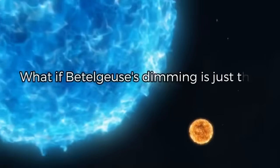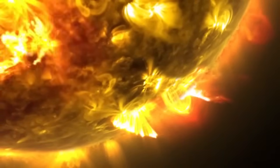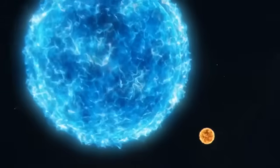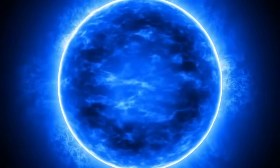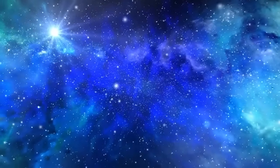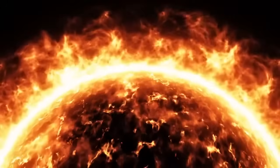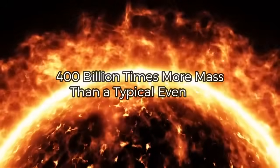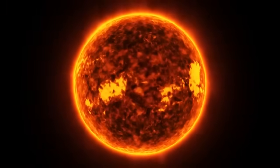What if Betelgeuse's dimming is just the beginning of a much larger mystery? The massive surface mass ejection, SME, that Betelgeuse experienced can be likened to a star-sized volcanic eruption of epic proportions. Imagine a celestial giant, a star so colossal that it dwarfs our sun, suddenly expelling a tremendous amount of material from its surface. This cosmic eruption sends shock waves rippling through the surrounding space, creating a massive plume of gas, molecules, and dust that partially obscures our view of the star. The scale of Betelgeuse's SME is truly mind-boggling. Astronomers estimate that the star ejected a staggering 400 billion times more mass than a typical event on other stars. To put that into perspective, the amount of material thrown off by Betelgeuse is equivalent to multiple times the mass of Earth's moon.